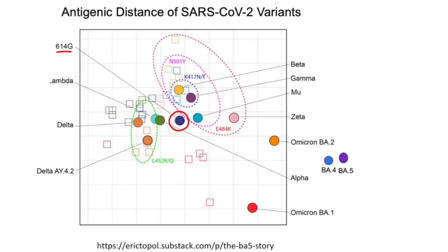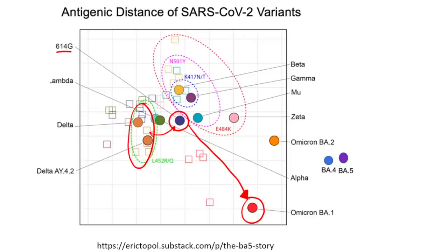What you can see here is an antigenic distance. Delta was fairly close, even though there was a significant difference. With Omicron, the first Omicron is a much more different variant of SARS-CoV-2. If we were to use the same graph, BA.5 would be way out here — and what you need to understand is that the majority of these differences are occurring in the spike protein.